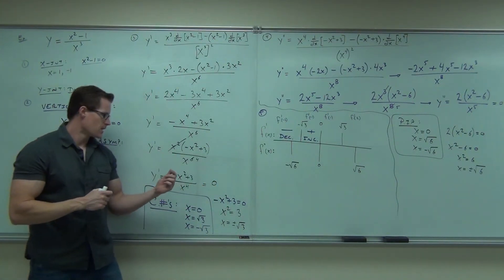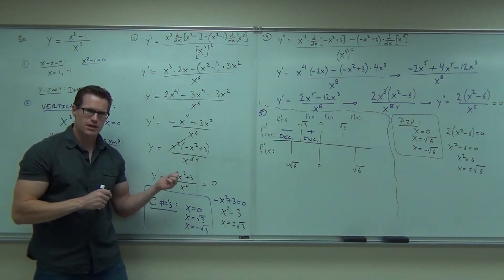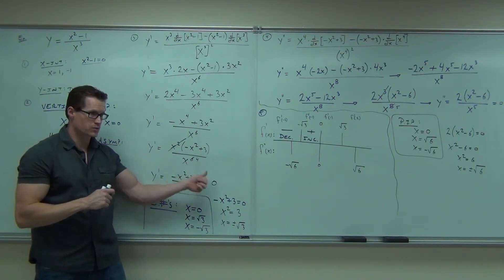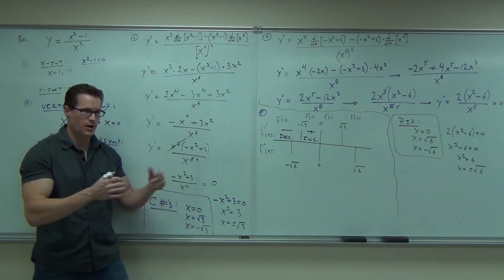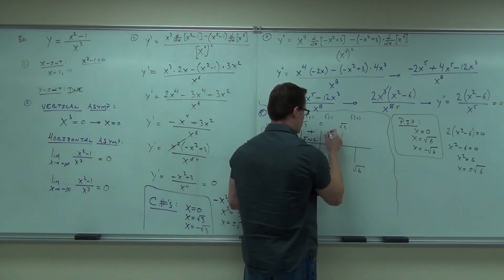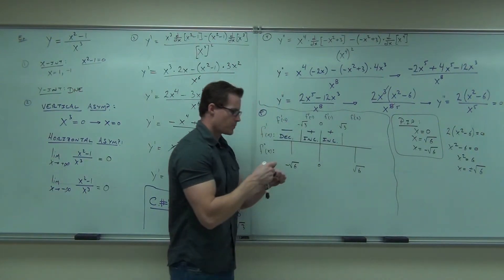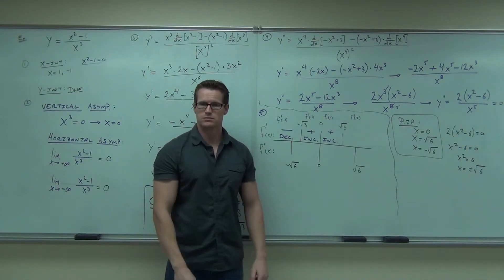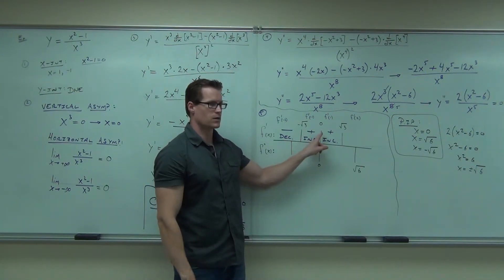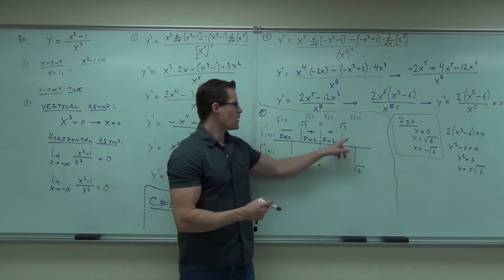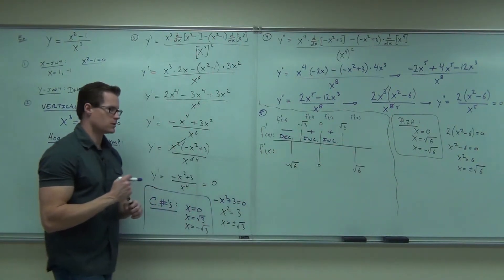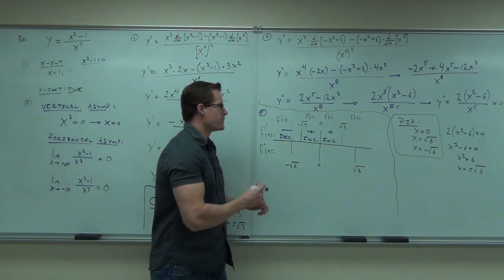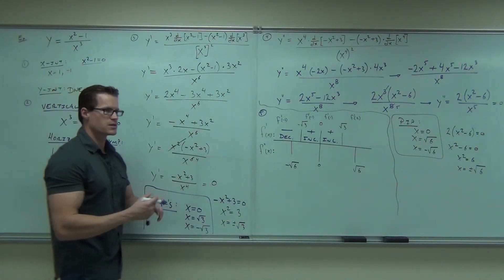For f prime of one, I get the same thing as negative one — that's positive, so increasing. So that zero actually didn't change — we're increasing and increasing again. That's interesting, so that zero is not a relative extreme. For positive two, you get negative over positive — that's negative, decreasing.